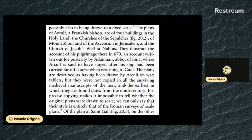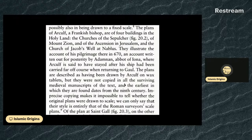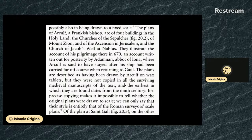The plans of Arculf, a Frankish bishop, are of four buildings in the Holy Land: the churches of the Sepulcher, of Mount Zion, and of the Ascension in Jerusalem, and the church of Jacob's Well at Nablus. They illustrate the account of his pilgrimage there in 670, an account written out for posterity by Adamnan, abbot of Iona, where Arculf is said to have stayed after his ship was carried far off course when returning to Gaul. That part of the story seems a bit far-fetched — how a ship could end up that far off course, meant to land in France and ending up in Scotland.